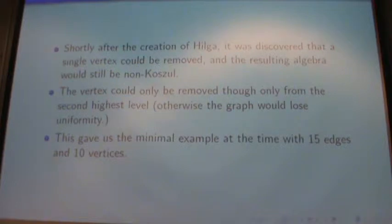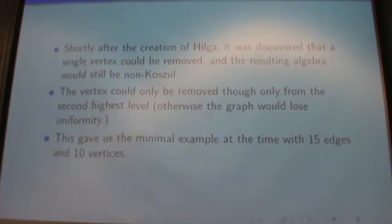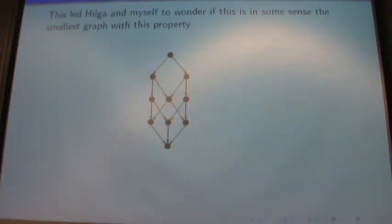And it wasn't until Hilga was created that we found a smaller example. A single vertex could be removed and the resulting algebra would be non-causal. However, it has to be removed from the second highest level, otherwise you lose uniformity and then causality doesn't even make sense. Though there is a way to extend causality to non-quadratic algebras. That's way out there. So this gave us the minimal example and it looks like this. But that's not the result I wanted to show because once I got this, me and Hilga got to wondering, what is the smallest one?